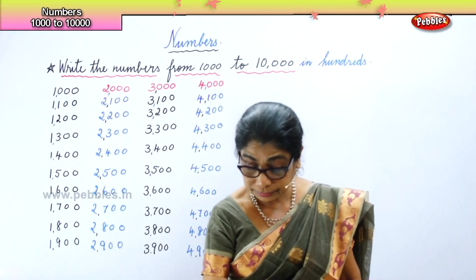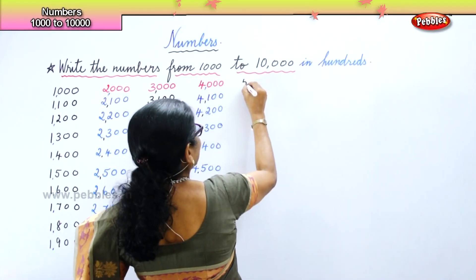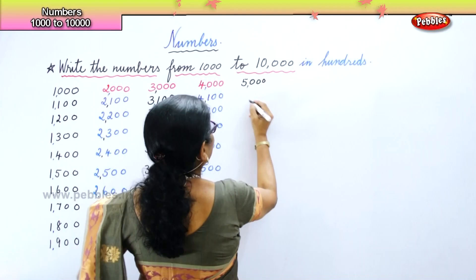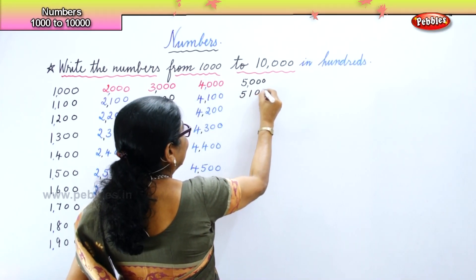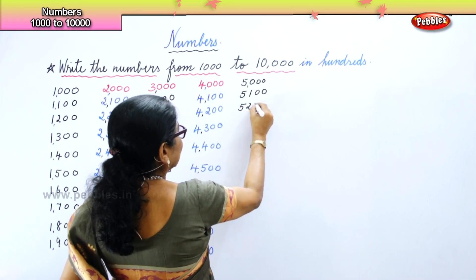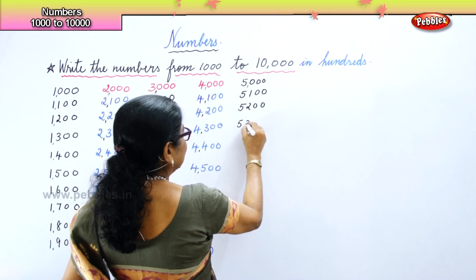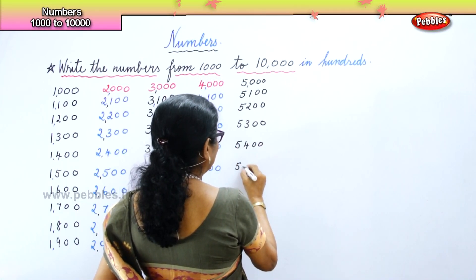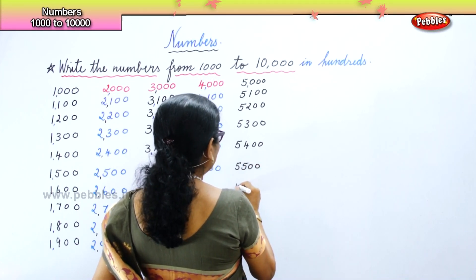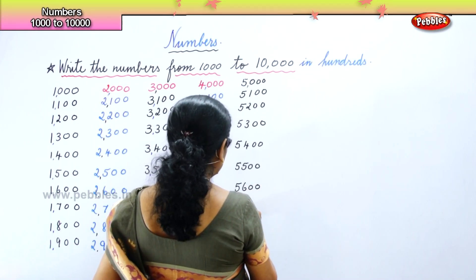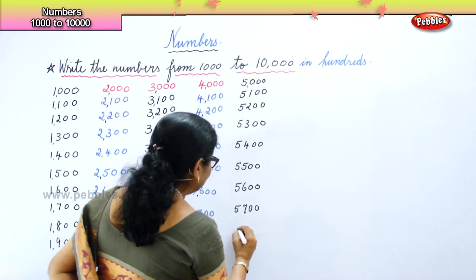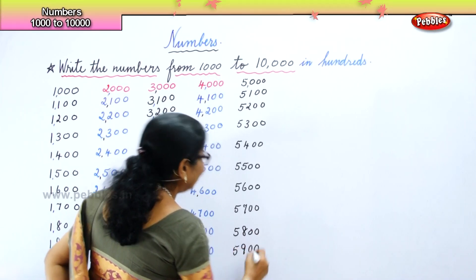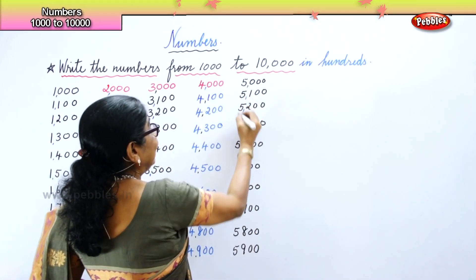Now four thousand nine hundred, five thousand — very good. Now we come on to five thousand. We have five thousand. Next: five thousand one hundred, five thousand two hundred, five thousand three hundred, five thousand four hundred, five thousand five hundred, five thousand six hundred, five thousand seven hundred, five thousand eight hundred, and five thousand nine hundred.